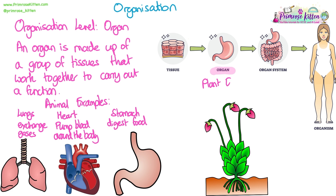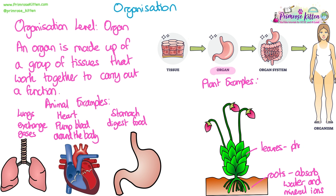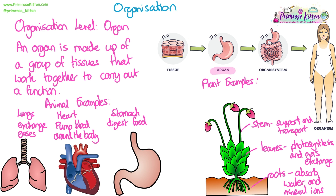There are also lots of different organs in plants. Roots are organs whose function is to absorb water and mineral ions. Leaves are organs whose function is photosynthesis and gas exchange. The stem is an organ whose role is support and transport. And finally the flower is an organ that has a role in sexual reproduction and seed dispersal.